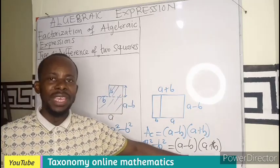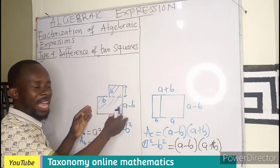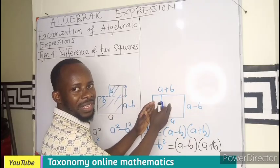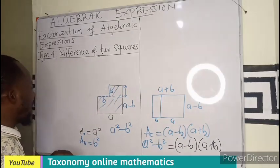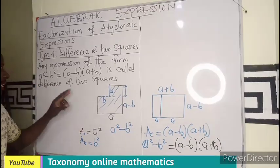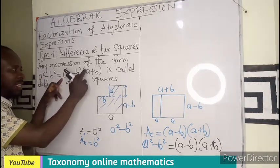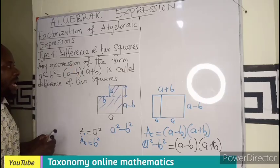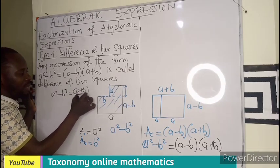So this expression we are having here is what we call difference of two squares. Don't forget, the first one was a square. The difference between the first square and the second square gives us A squared minus B squared. If you restructure this diagram, the area will also mean A minus B times A plus B. When we have any algebraic expression in the form A squared minus B squared, it equals A minus B in one bracket, times A plus B in one bracket. This is called a difference of two squares. Bear in mind that multiplication is commutative, so this could also mean A plus B times A minus B.